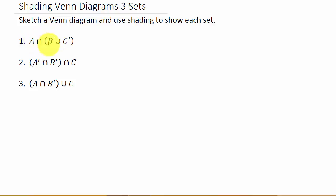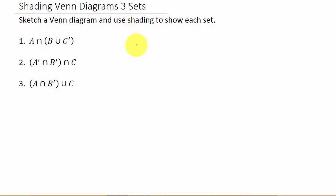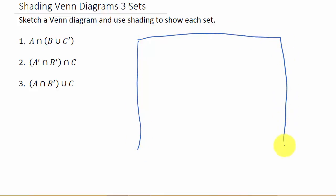Let's get started on the first one. We've got A intersect B union C complement. To do this, the first thing we need to do is figure out the part inside the parentheses, and then once we get that, we'll do whatever that is intersect A.